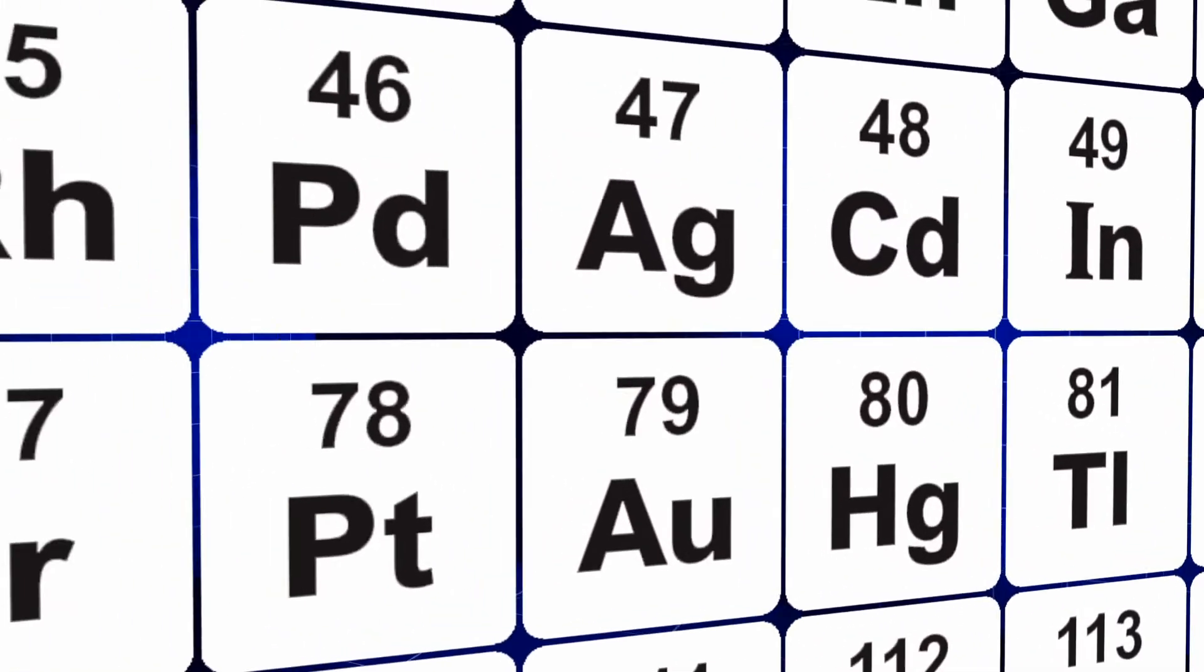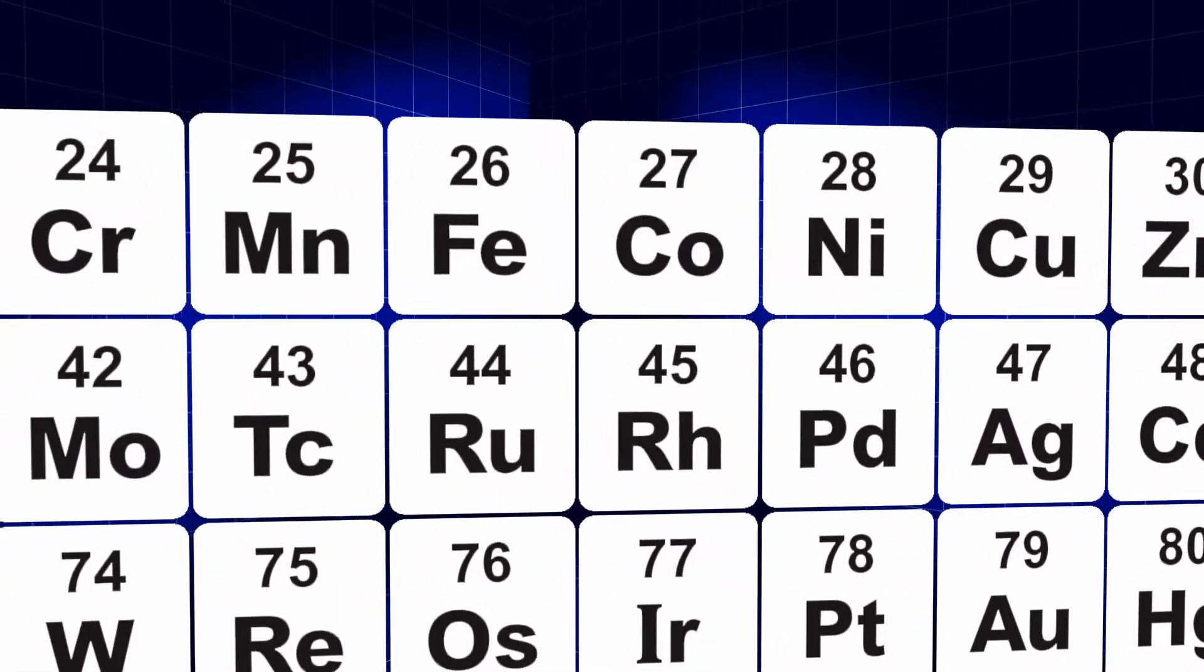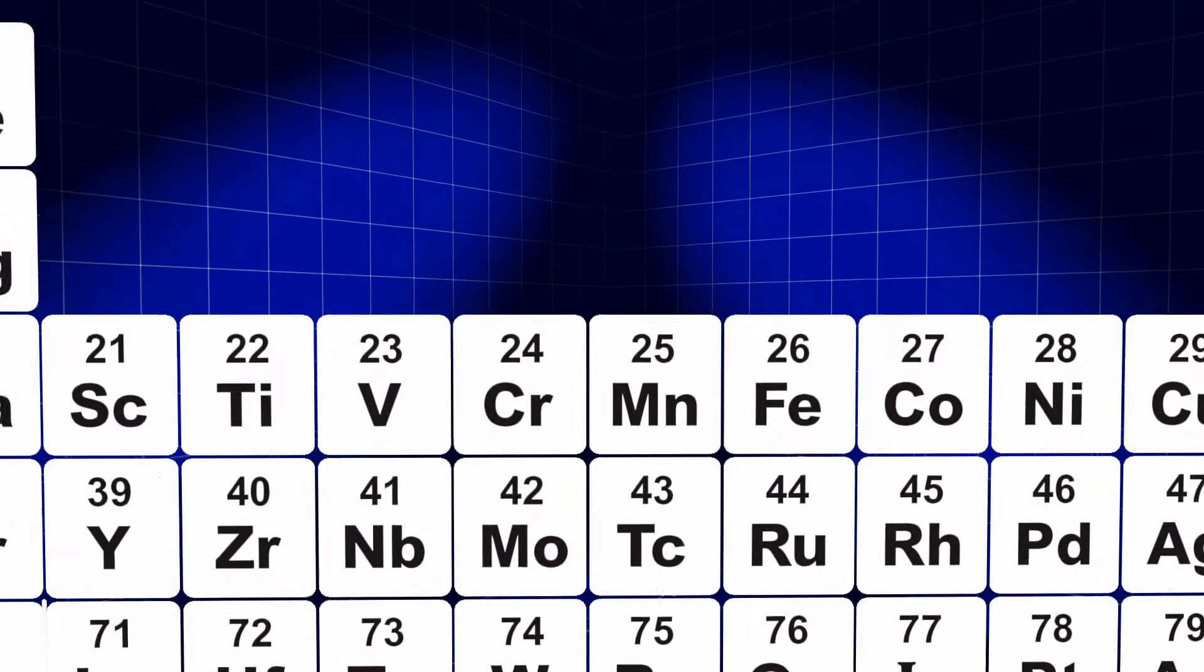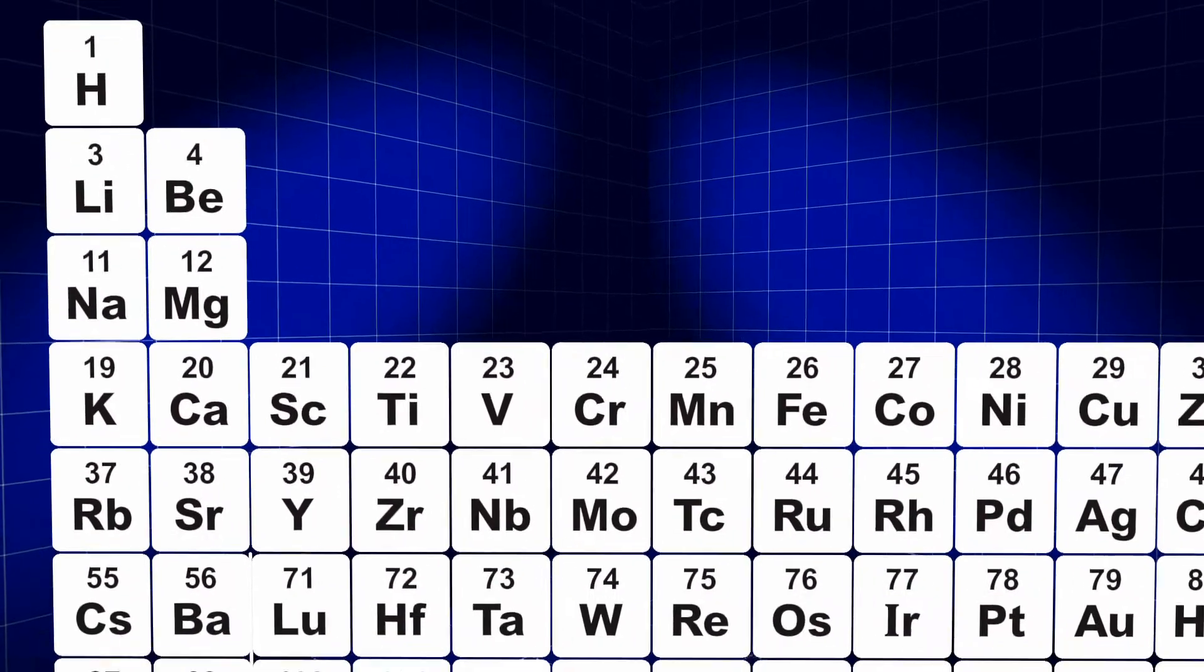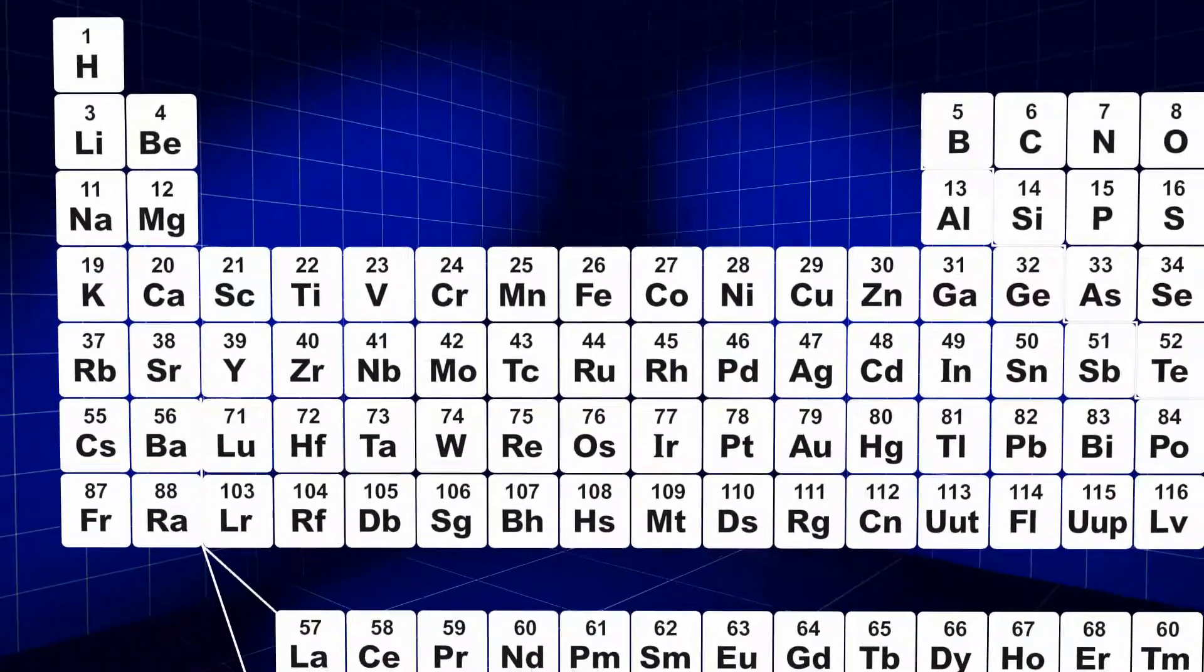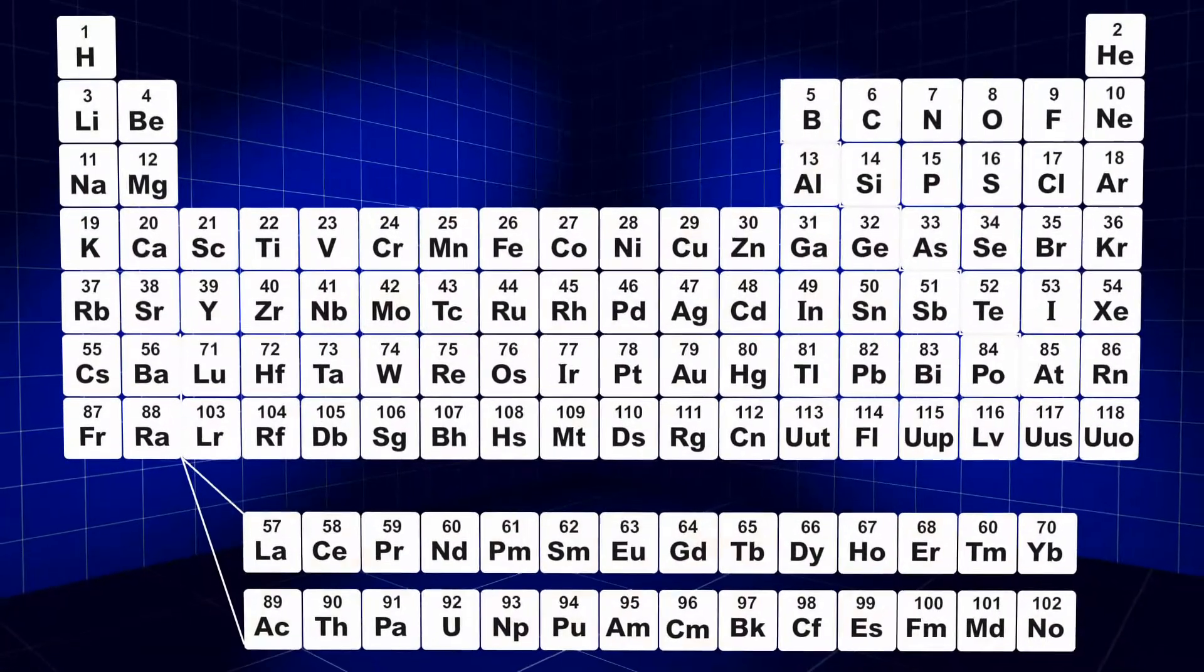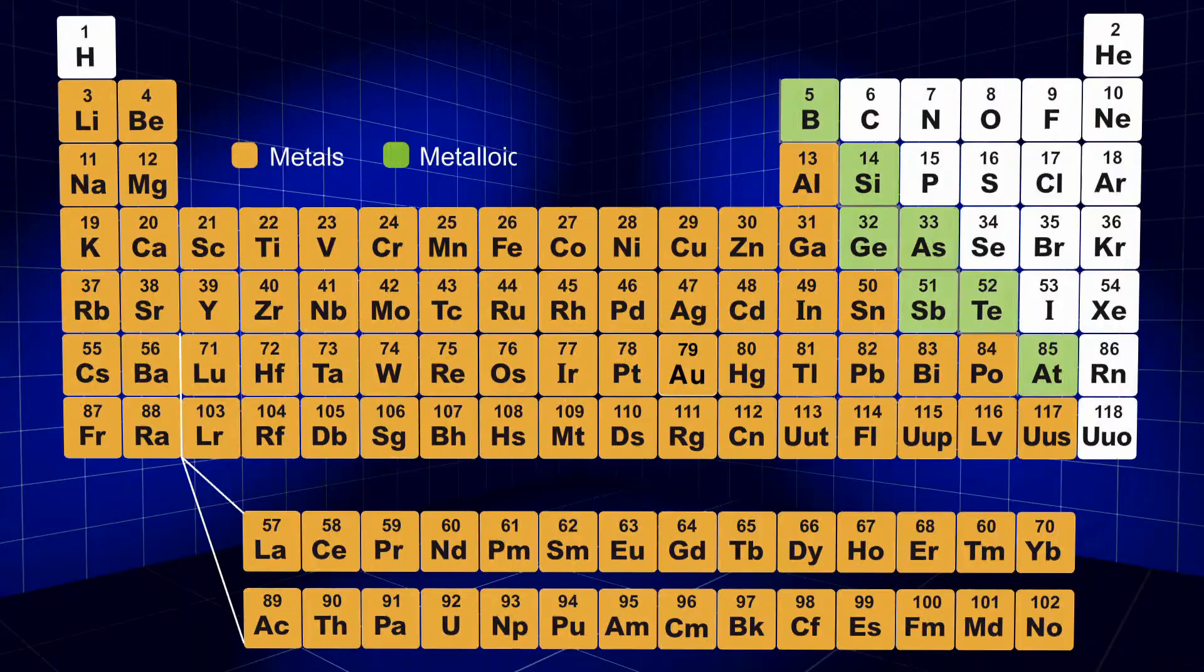The periodic table is arranged in a way that makes it easy to understand which elements are best suited for certain applications. For example, from left to right, the periodic table is organized in three major categories: metals, metalloids, and nonmetals.